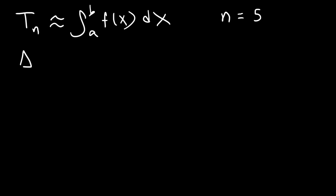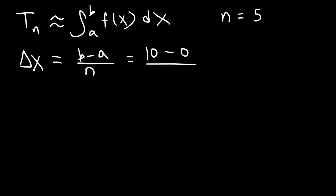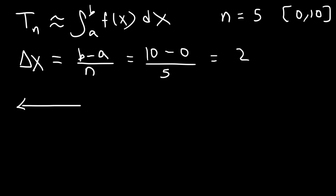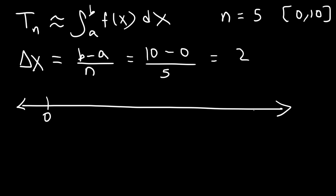First we need to calculate delta x, the width of each sub-interval, and that's going to be b minus a divided by n. We're going from 0 to 10, so b is 10, a is 0, and n is 5. So delta x is 10 divided by 5, which equals 2. Now I like to create a number line from a to b — in this case 0 to 10 — where the width of each sub-interval is 2.